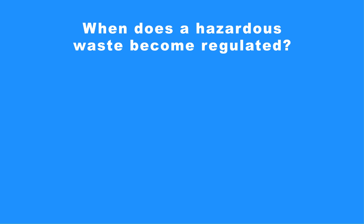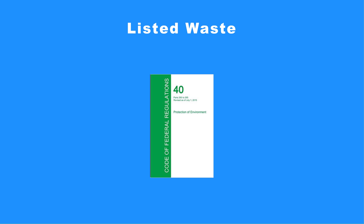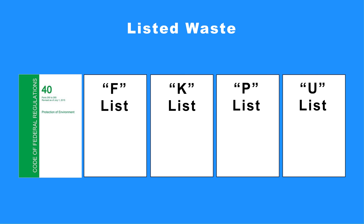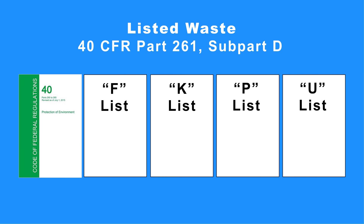When does a hazardous waste become regulated? There are two ways a waste may be brought into the hazardous waste regulatory system: listing and identification through characteristics. Your waste is considered hazardous if it appears on any one of the four lists of hazardous waste contained in RCRA Regulations 40 CFR 261.